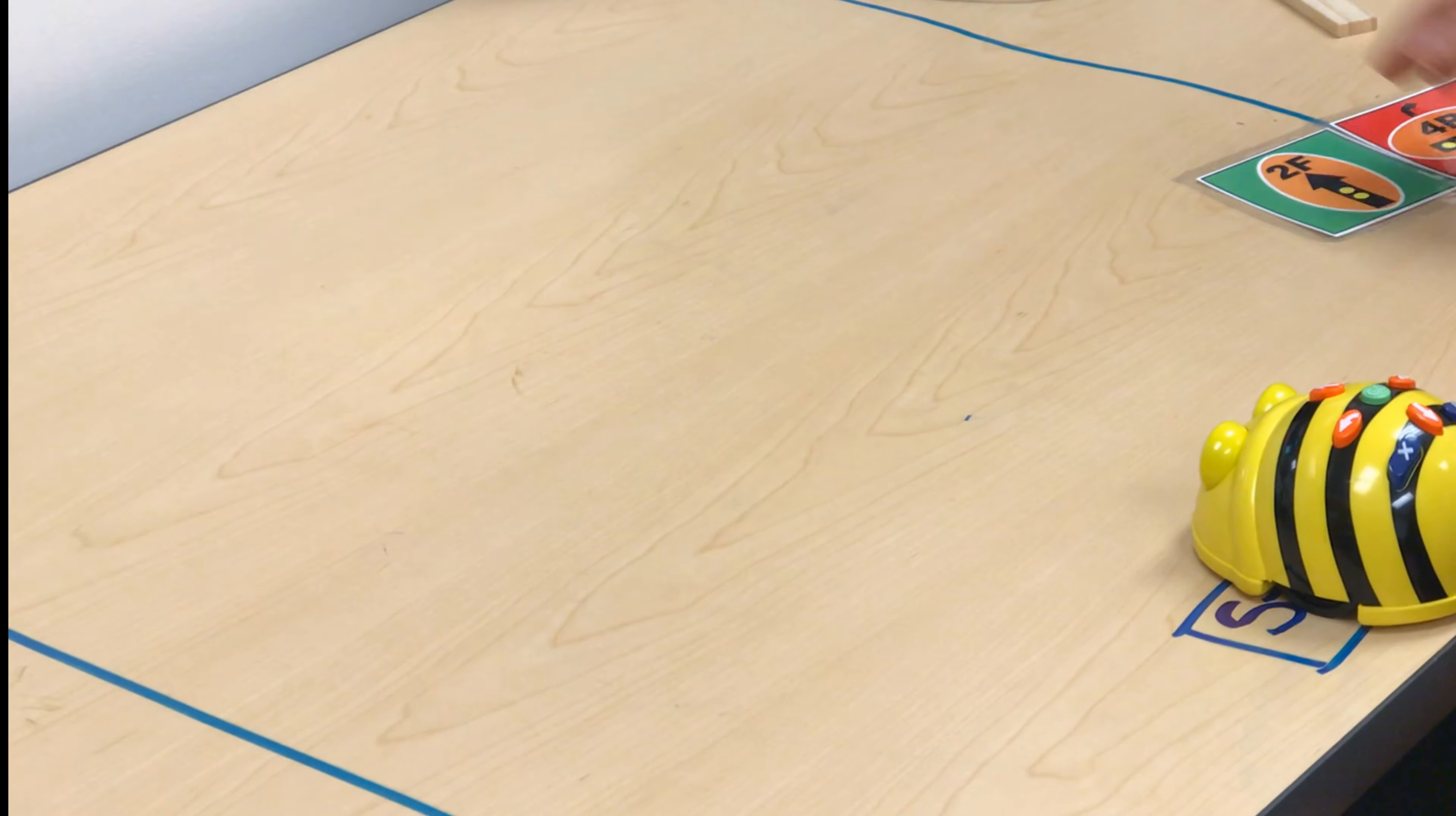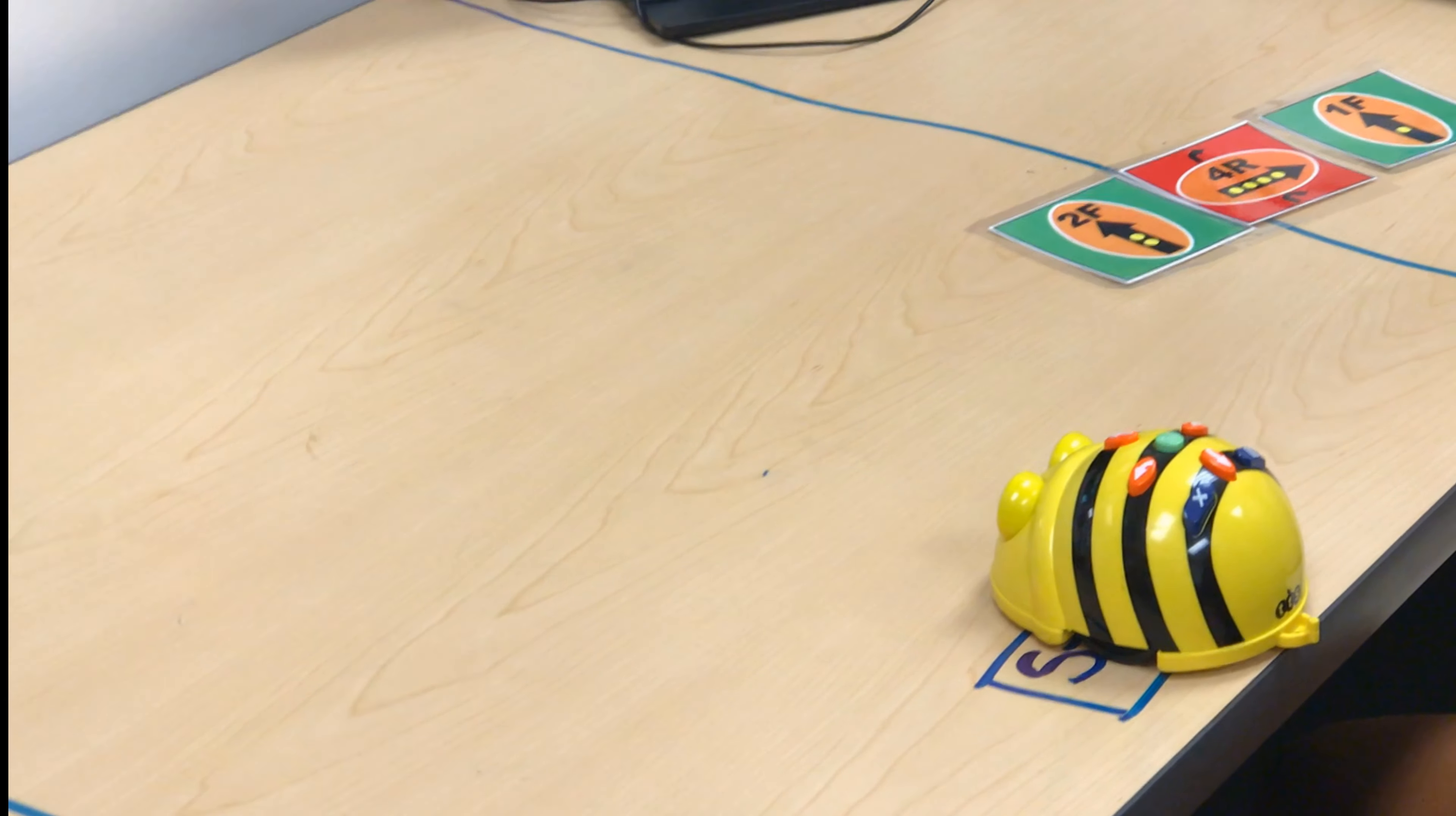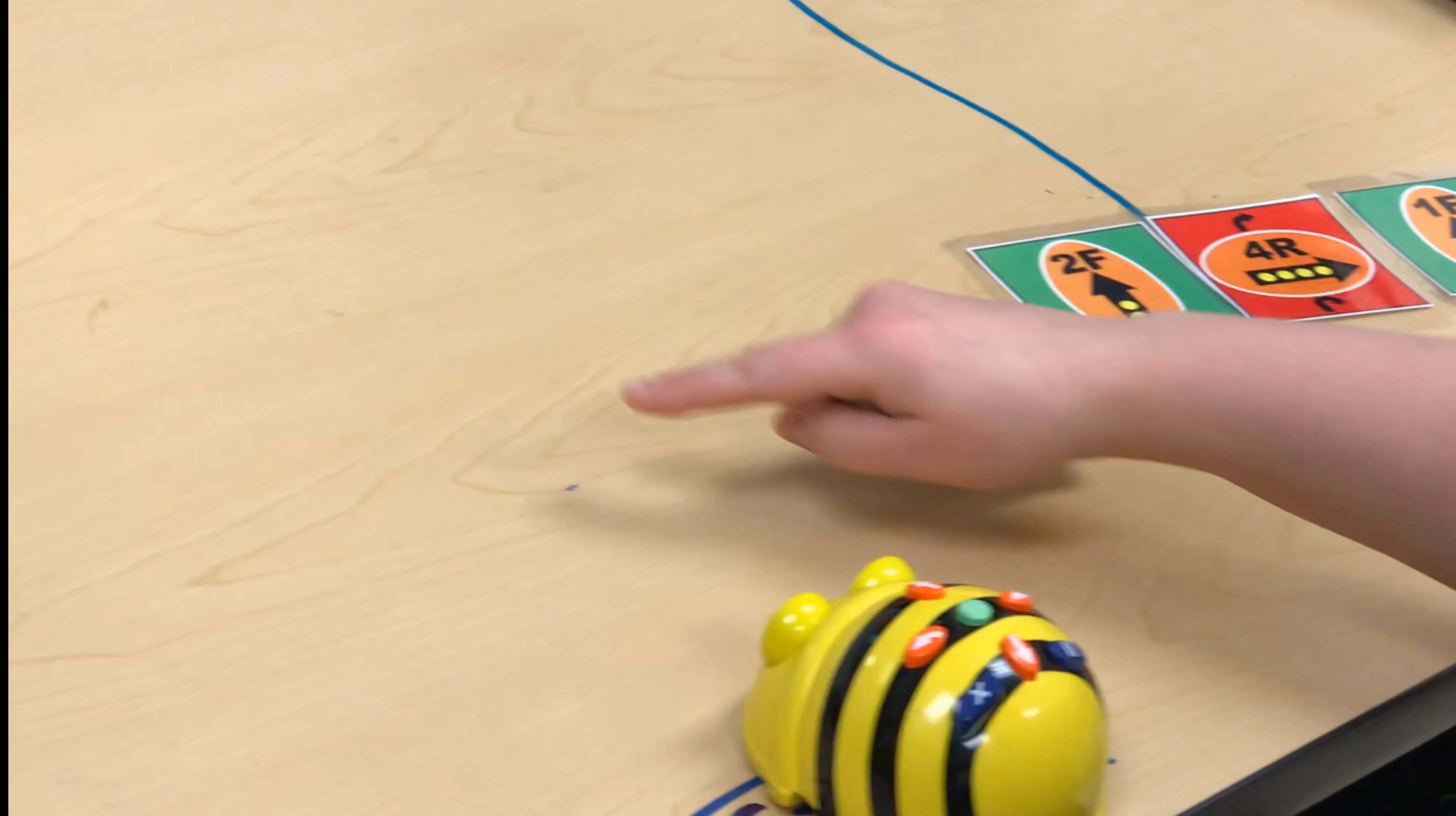Now you're going to look at your code. I gave you a finish line. You need to predict where you think your finish line is going to be. We talked about a prediction meaning it is taking an educated guess. So I'm going to predict since I have to go forward twice: one, two.